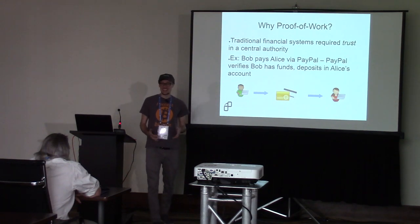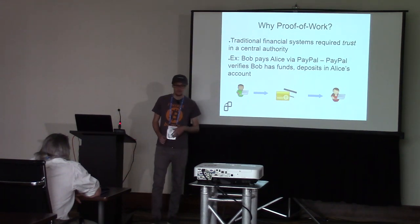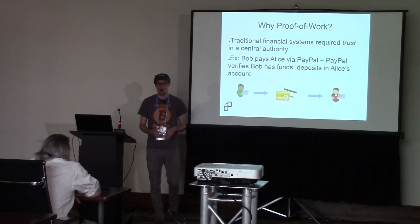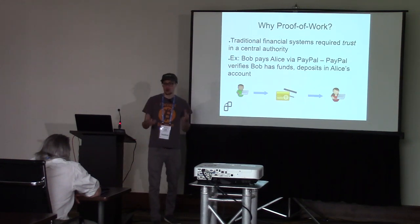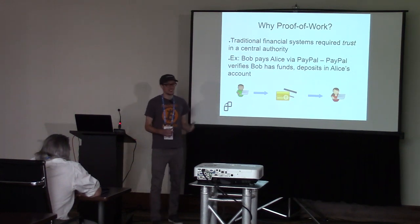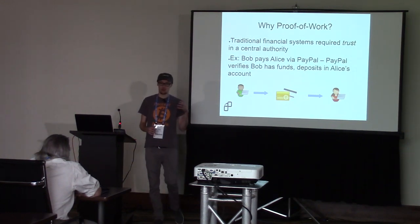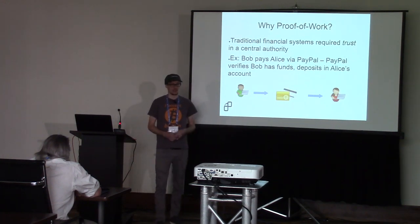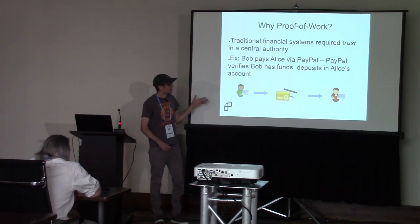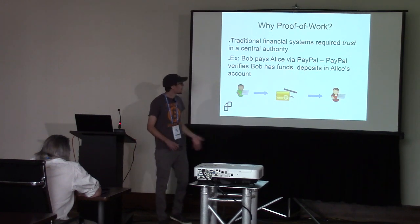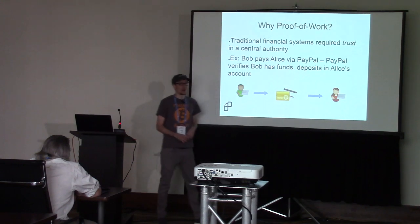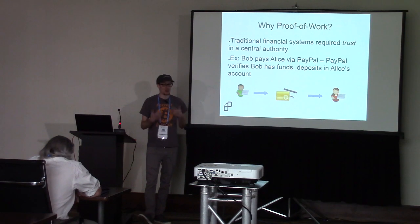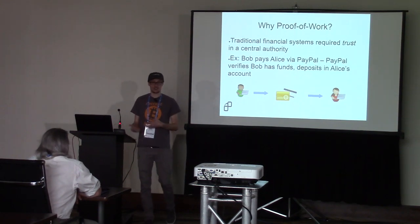Why do we need proof of work in the first place? In traditional payment systems like credit cards, PayPal, Venmo, and similar platforms, we have to trust a central authority to process payments and verify transactions. If Bob pays Alice via PayPal, PayPal sits in the middle and verifies that Bob has the funds and that the final settlement occurs on Alice's end.